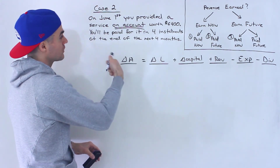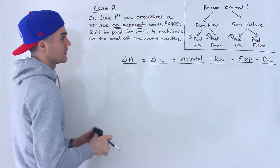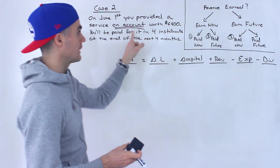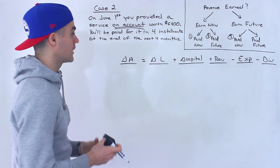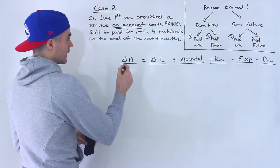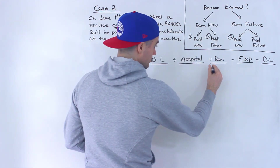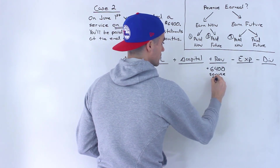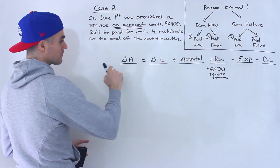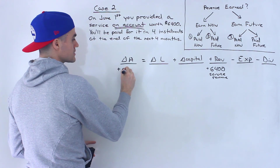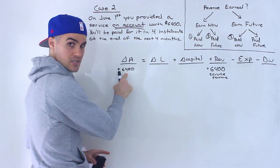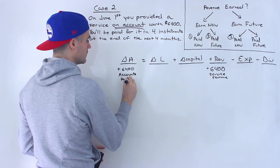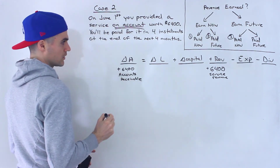You'll be paid in four installments at the end of the next four months. You provided the service, so you earned the revenue now, but you're going to be paid in the future. So what happens right now is you recognize the revenue — $6,400 in service revenue goes up — but you haven't been paid yet, so your assets increase by $6,400 as accounts receivable, not cash.